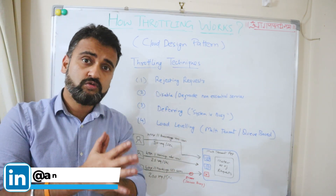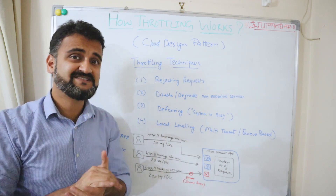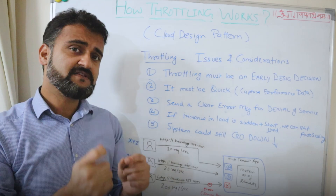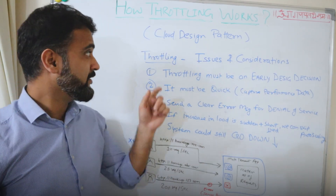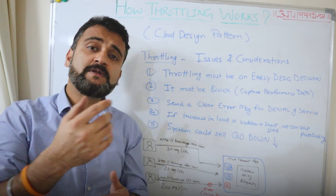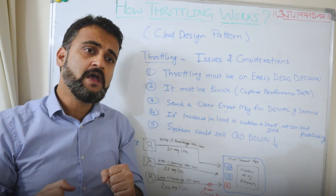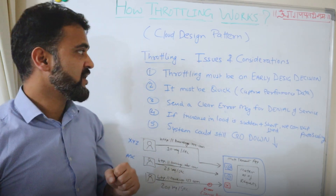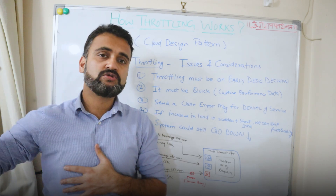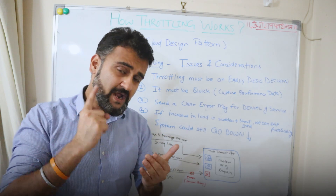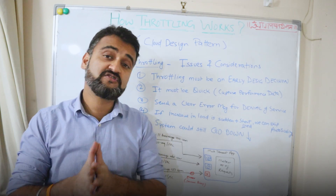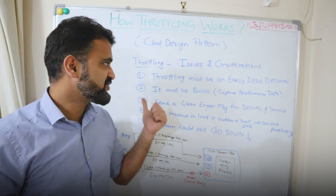Before using throttling, we need to consider a few things. With every pattern, we need to understand the risks, issues, and considerations. The very first consideration is that if you want to implement throttling, it has to be an early design decision — you cannot deploy an application to production and then expect to implement throttling. The second consideration is that throttling needs to be quick. Whenever the system detects requests are passing the threshold of CPU and memory, it has to quickly identify that and ensure throttling happens fast so the system comes back to normal. If it is not happening on time, it loses its purpose.